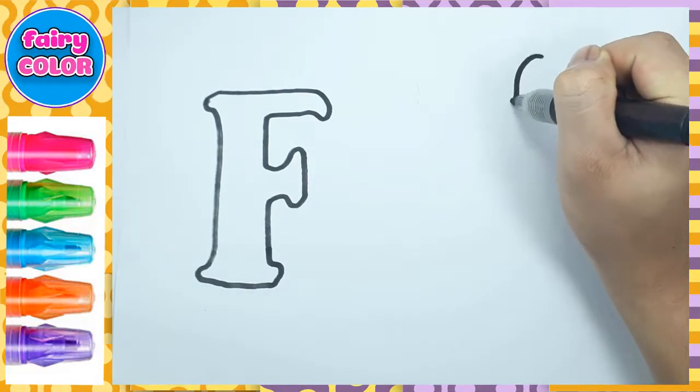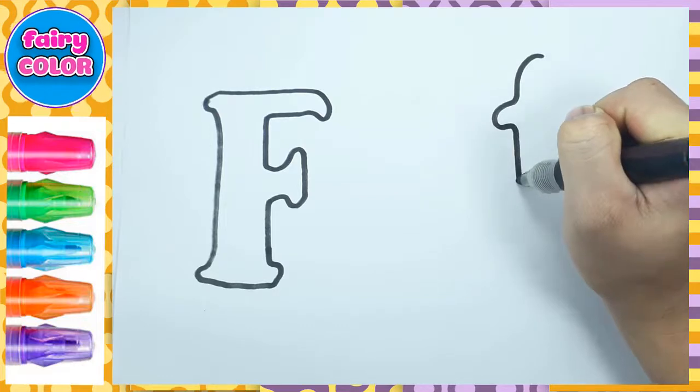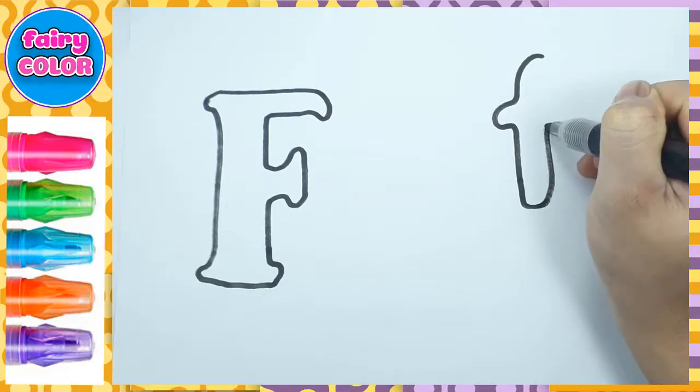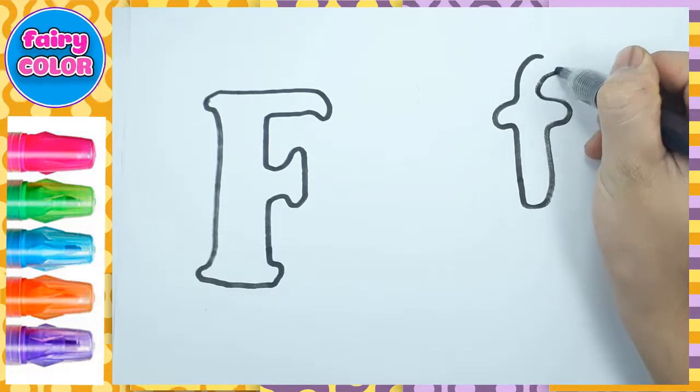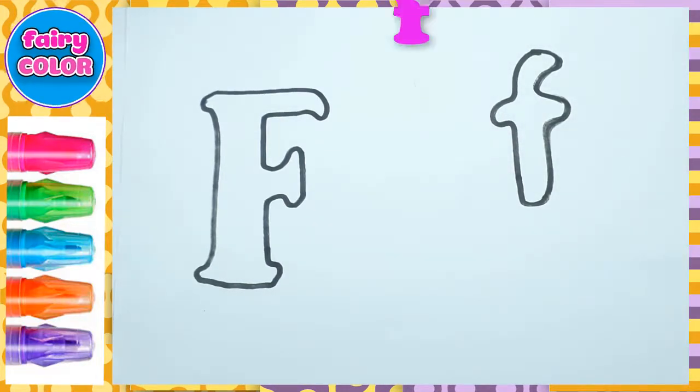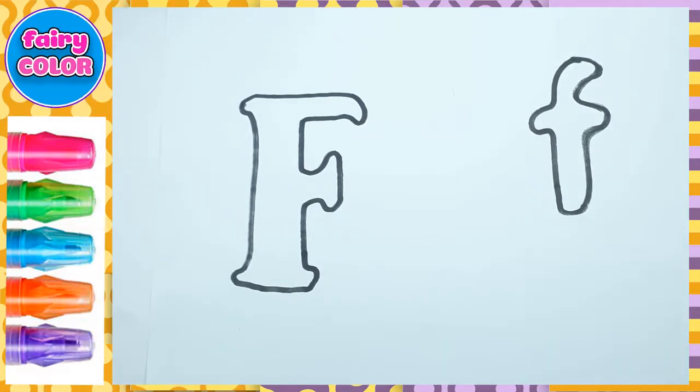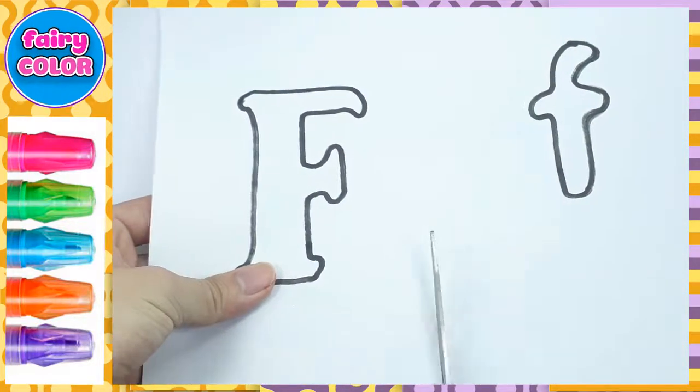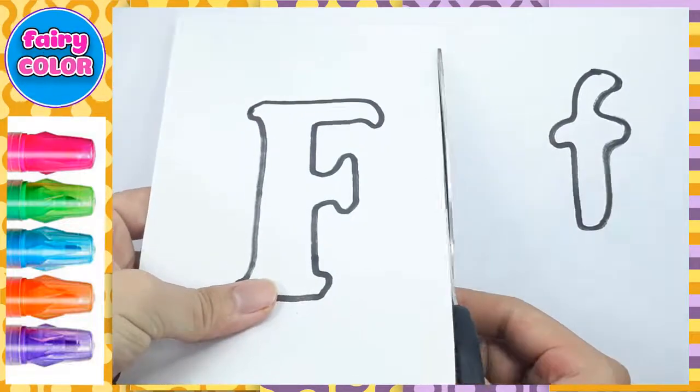F. A, B, C, D, E, F, G, H, I, J, K, L, M, N, O, P, Q, R, S, T, U, V, W, X, Y, and Z. Now I know my ABCs, next time won't you sing with me. F.